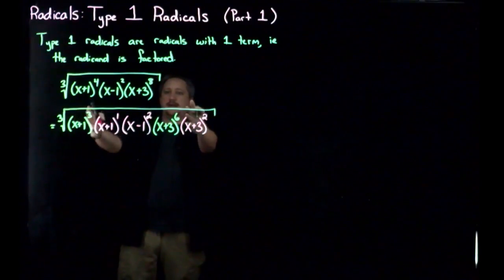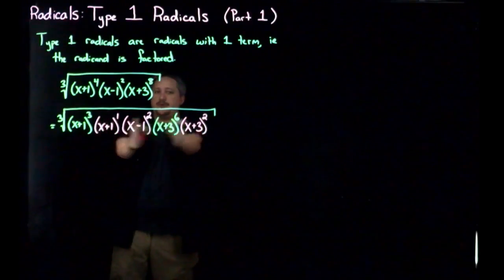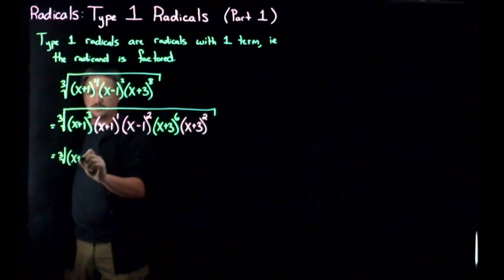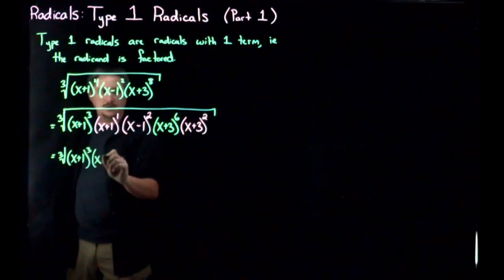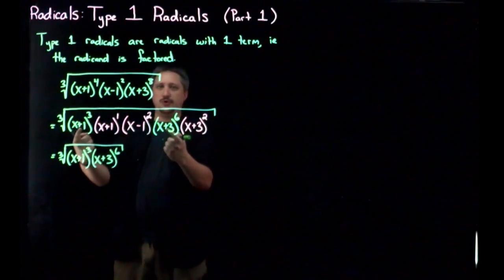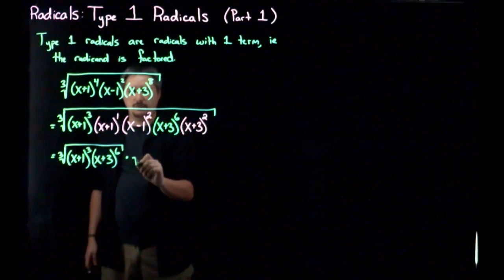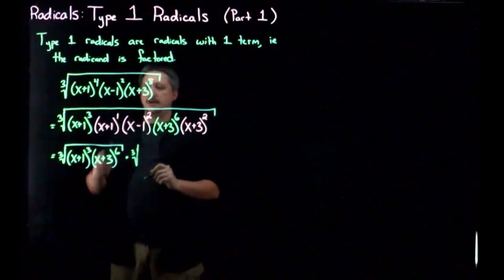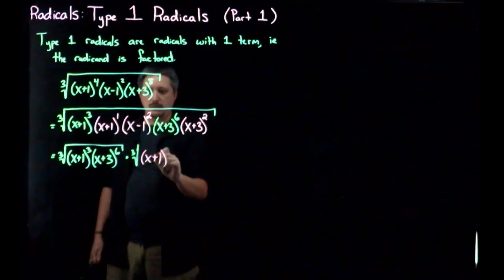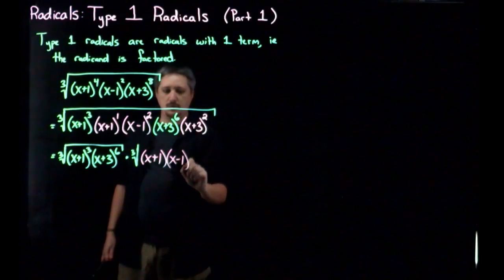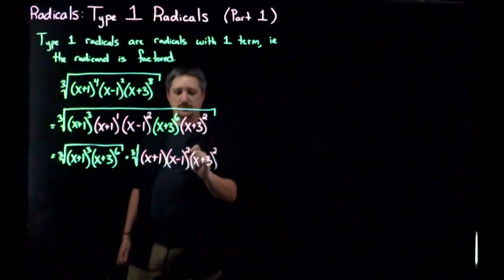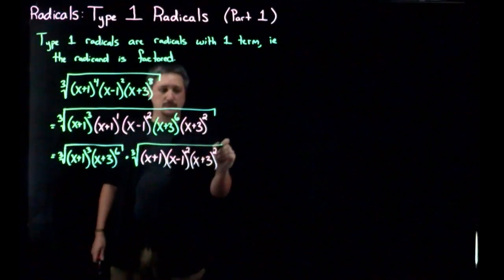So then I want to take this and I'm going to move all of the multiples of 3 to the front and break it off as its own root. So I have, in particular, the third root of this piece, x plus 1 cubed, and that piece, x plus 3 to the sixth. So that's those two multiples that I have. Times third root, and then I have the remainder bits. So I have x plus 1 to the 1, x minus 1 squared, and x plus 3 also squared.